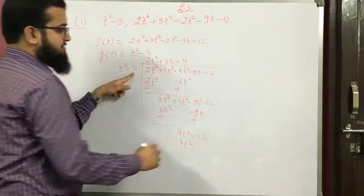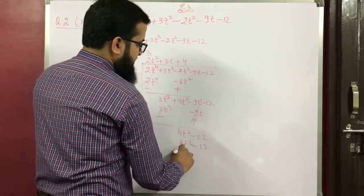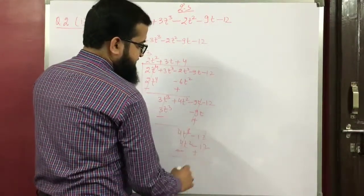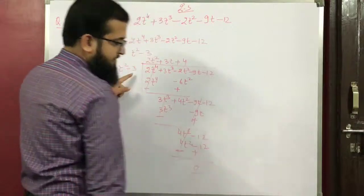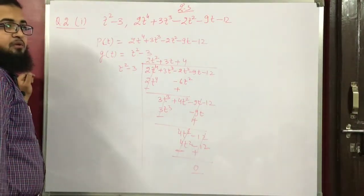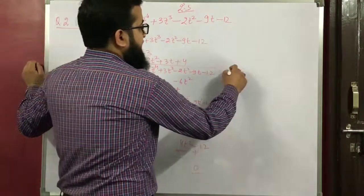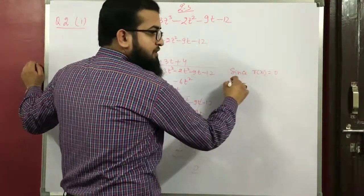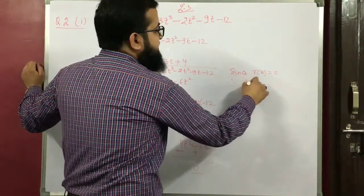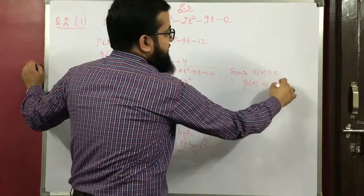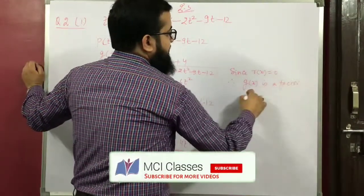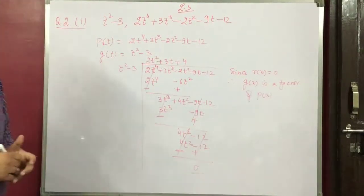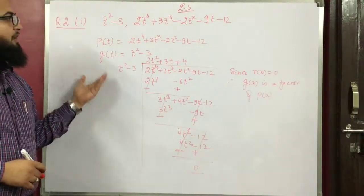4 times minus 3 is minus 12, so after changing signs this is negative and this is positive. The remainder equals 0. Therefore, since r(x) = 0, g(x) is a factor of p(x).